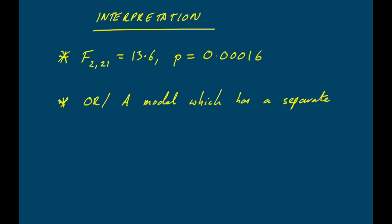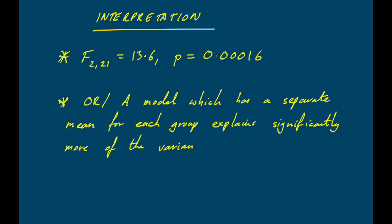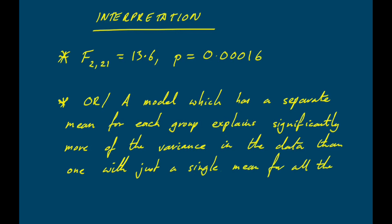An alternative interpretation of the significant F statistic is that a model fitting a separate mean to each group explains significantly more of the variance in the data set than a model with just a single overall mean. This interpretation becomes more useful for complex linear model problems, where thinking about differences between specific pairs of means is less practical.